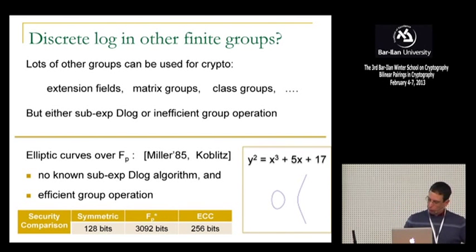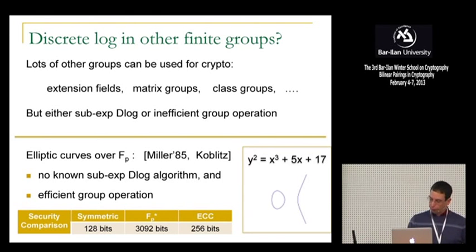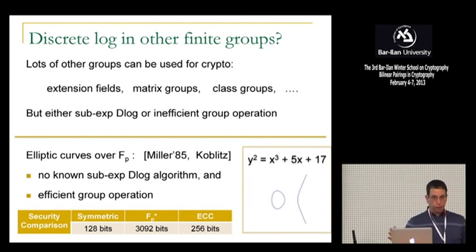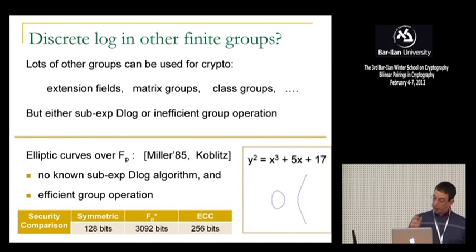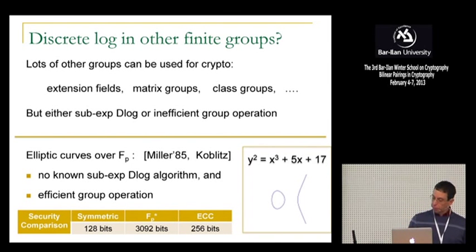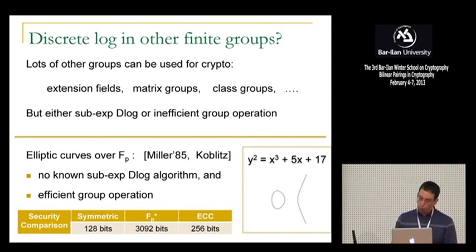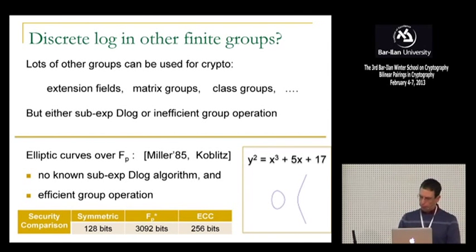So if you haven't seen this before, this is what an elliptic curve looks like. If you draw it over the reals, this is what it looks like for this particular curve. Of course, we use these curves over a finite field, where this picture doesn't really make sense, but at least you get a sense of what these things look like. Basically, security scales much nicer with the security parameters. For example, if your symmetric key system uses 128-bit keys, to achieve comparable security using finite field arithmetic, you have to use something like a 3,000-bit prime. Whereas the beauty of elliptic curves is the size of the parameters only have to be 256 bits, not much larger than your symmetric key size.